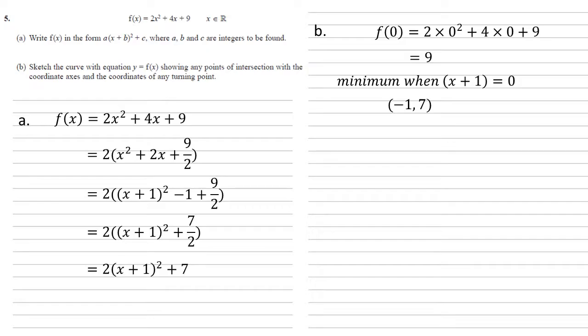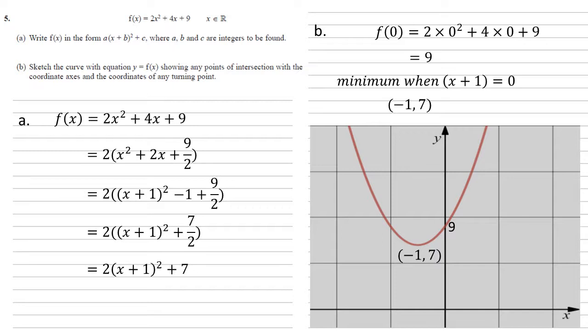We can now do a sketch of our graph. We know it's a positive quadratic graph so it's going to be the quadratic curve. It's going through 9 on the y-axis. It's got a minimum of (-1, 7) so it looks like this. Make sure when you're drawing that graph that you've got the 9 and the (-1, 7) clearly labelled.